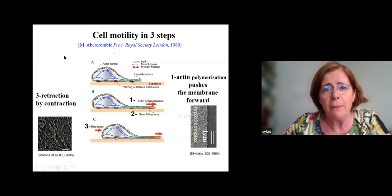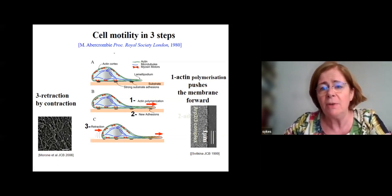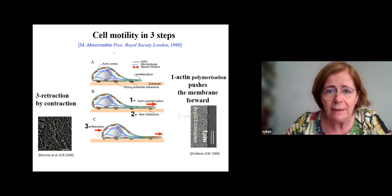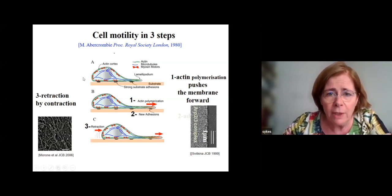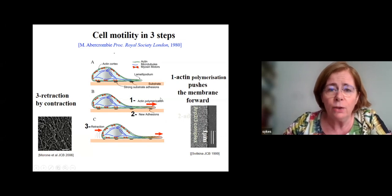Cell motility was understood by Abercrombie a while ago, even before we had all these very nice imaging capacities. He was the one describing cell movements — crawling cells — in three steps.